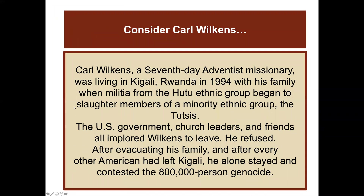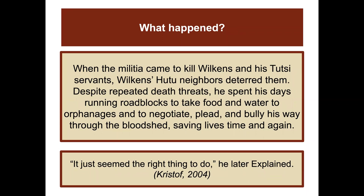Consider the case of Carl Wilkins. He was a Seventh-day Adventist missionary living in Kigali, Rwanda in 1994, when militia from the Hutu ethnic group began to slaughter members of the minority ethnic group, the Tutsis. The U.S. government, church leaders, and friends all implored Wilkins to leave. He refused. After evacuating his family and after every other American had left Kigali, he alone stayed and contested the 800,000-person genocide. When the militia came to kill Wilkins and his Tutsi servants, Wilkins' Hutu neighbors deterred them. Despite repeated death threats, he spent his days running roadblocks to take food and water to orphanages and to negotiate, plead, and bully his way through the bloodshed, saving lives time and time again.